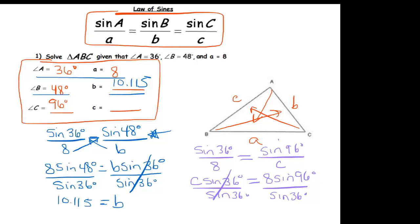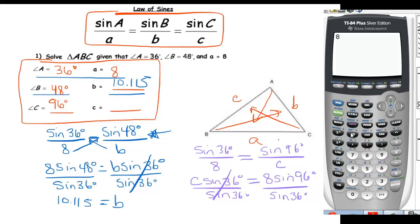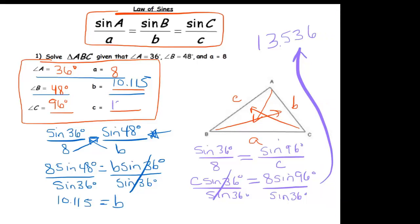And then I'm going to go to my calculator. 8 times sine of 96, and divide that by sine of 36, which gives me 13.536. Good. So we've successfully solved this triangle.